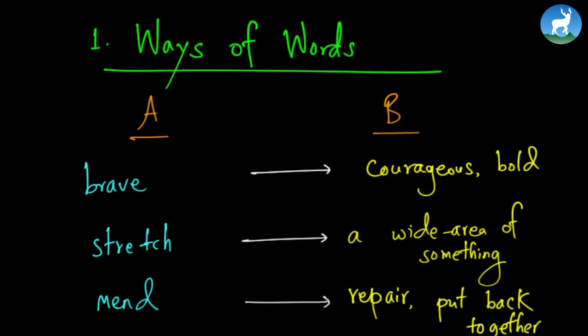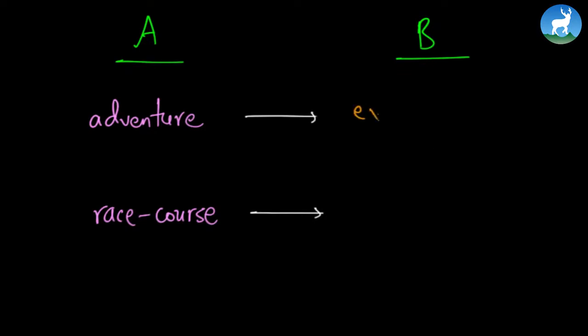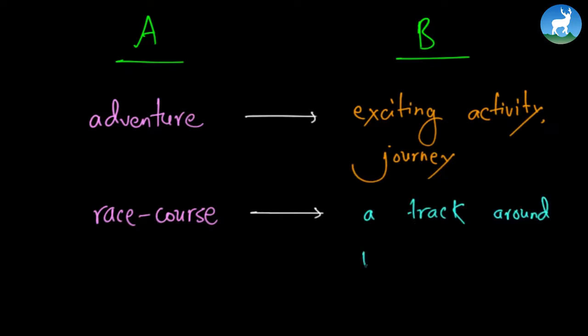Let's solve some more questions from ways with words, column A and column B. We have the word adventure and race course. The meaning of the word adventure is exciting activity or journey. And the meaning of race course is track around which horses race.